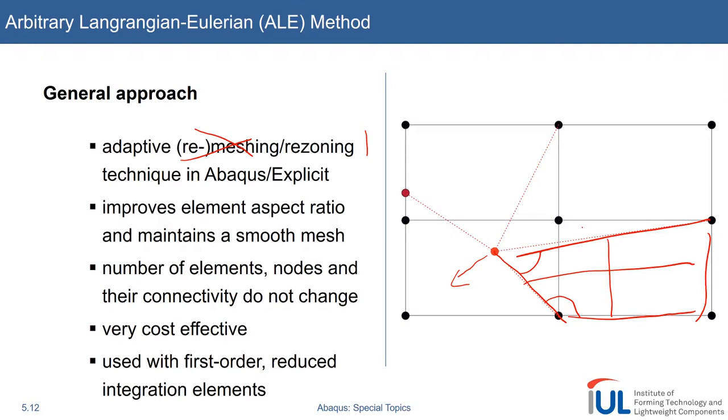As opposed to a true remesher, this is insanely cost effective. So this is done, for example, after every three, five, or ten increments in your explicit analysis. So we are talking about milliseconds between two ALE steps. So it will do a couple of explicit increments, then stop, will apply this technique, run for another ten increments, stop for a while, and then continue.